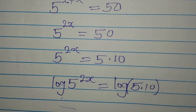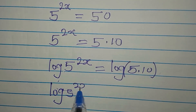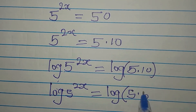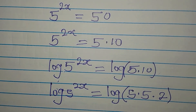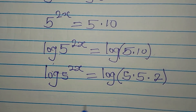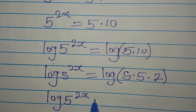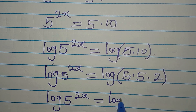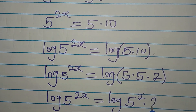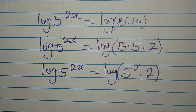Actually, let me rewrite this. We have log 5 to the power of 2x equals log of the bracket 5 times 5 times 2, because 5 times 5 times 2 equals 50. So we have log 5 to the power of 2x equal to log of 5 squared multiplied by 2.